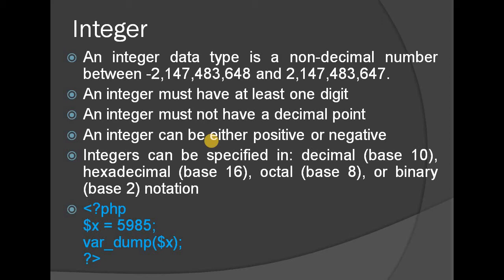Integer is a positive or negative non-decimal number. For example, in PHP, $x = 5985. That is an integer data type.